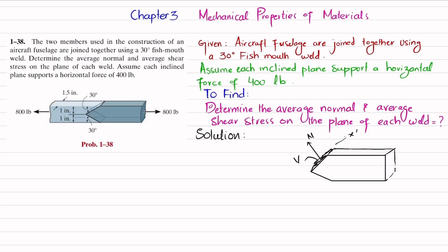It is given that this face experiences 400 pounds, and similarly the lower one also faces 400 pounds. On this inclined face we have a shear force V and a normal force N. We are going to find this shear force V and normal force N on the inclined plane.